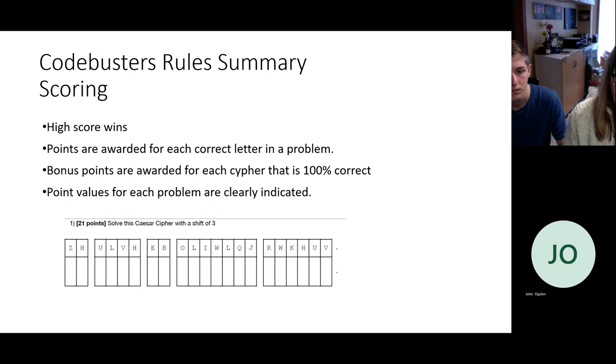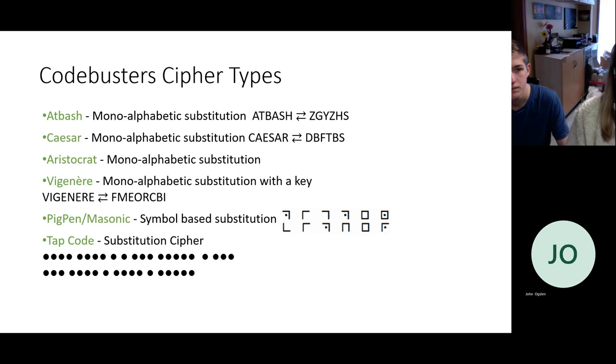And the points values for each problem are clearly indicated. So for example, the example on the screen, it says 21 points, solve this cipher, Caesar cipher with a shift of three. So if they complete it 100%, they will get 21 points. If they don't complete it 100%, they'll get something less than the 21 points based on each letter that they get correct. Now any letters that they are given, like if they were given a crib, they're not going to get points for those letters because they were given those letters, only ones that they've actually solved.